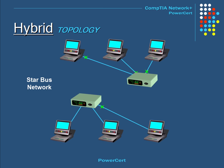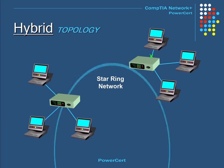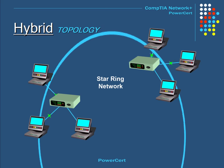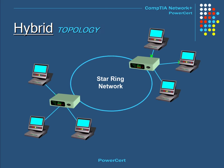In a star bus network, two or more star topologies are linked together using a single bus connection. And in a star ring network, two or more star topologies are linked together to form a large ring network.